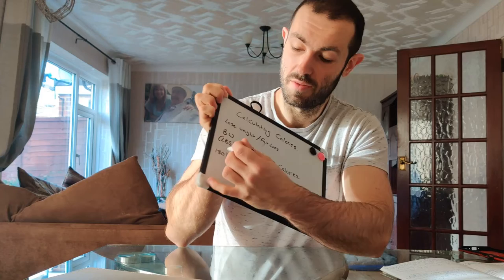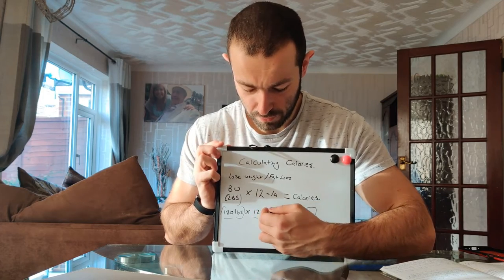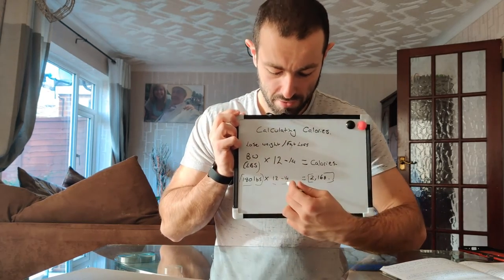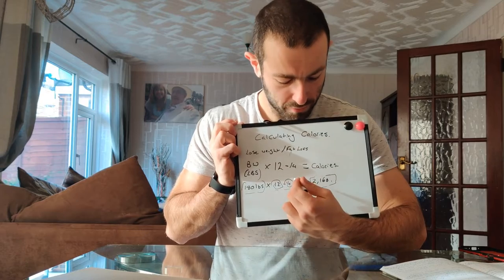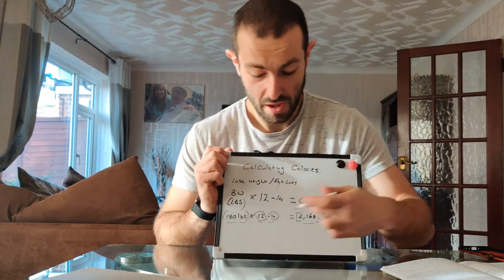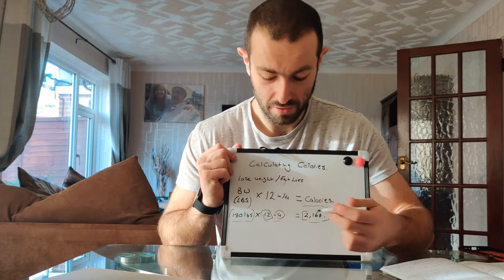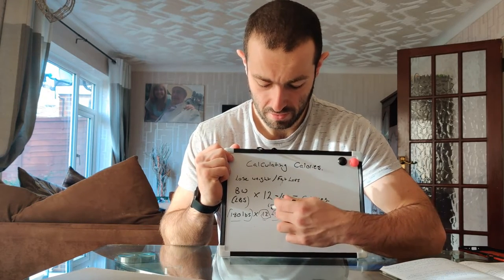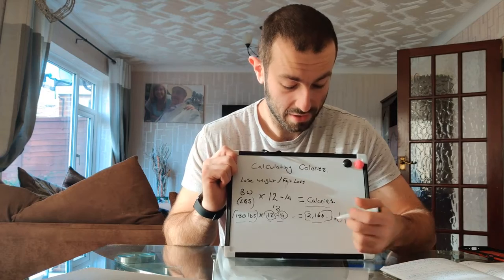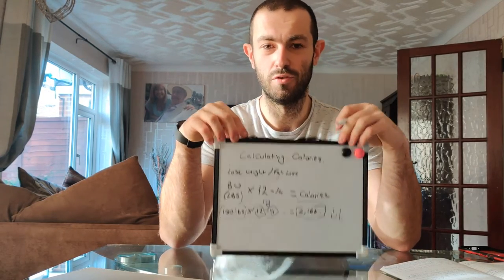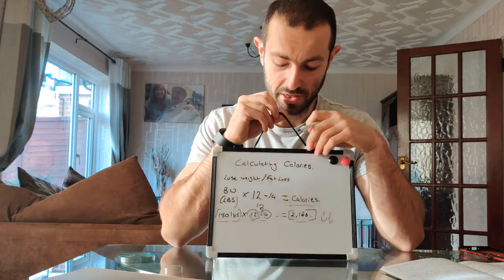Get your body weight, no matter what you weigh. For an average 180 pound person, times it by 12 to 14 depending on how strict you want the fat loss to be. If you find that 2,160 calories isn't producing weight loss, drop the calories — maybe times it by 13, test it for a week or so, and if not, drop calories again. This isn't a foolproof method; it's just a blueprint to work from. It's not going to be the magic number for everyone.